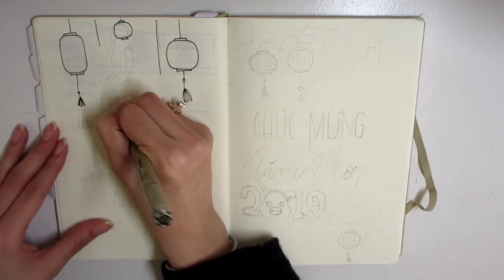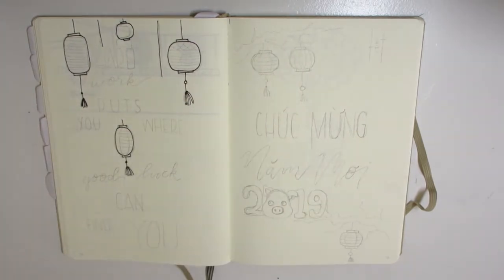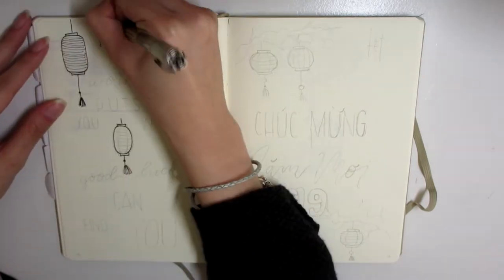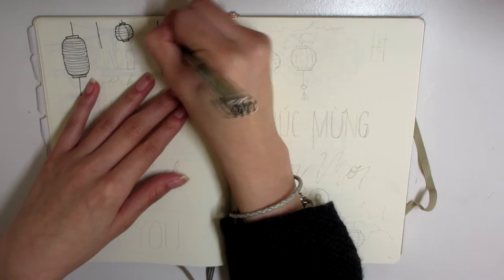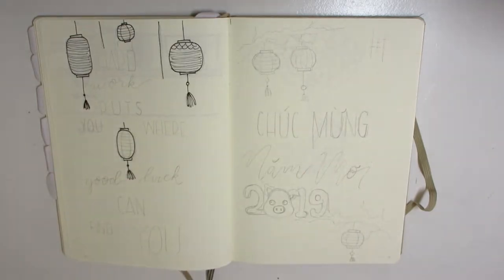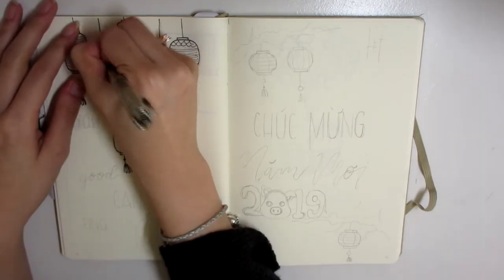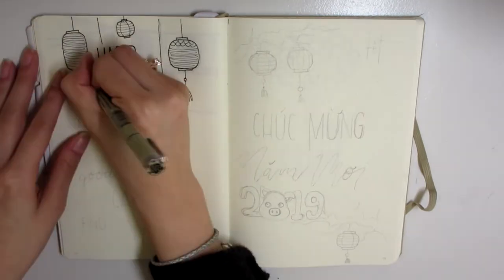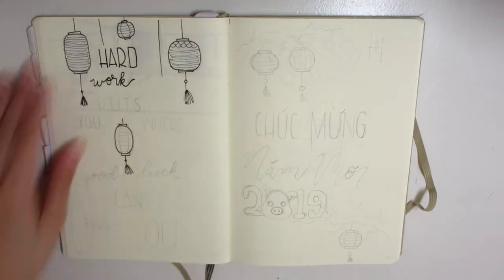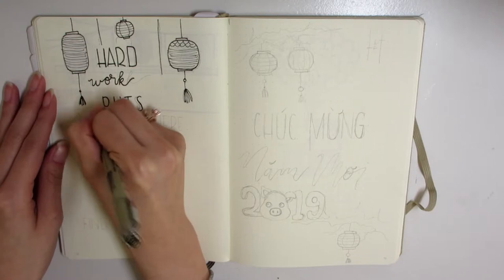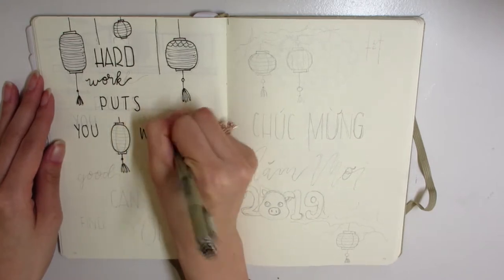I'm just drawing all the lanterns for the quote page. The quote is 'hard work puts you where good luck can find you,' and I thought that was very fitting for the theme of this month because of Lunar New Year and lanterns and all that good luck. I thought that would be a good motivator for me because I have two midterms in February.